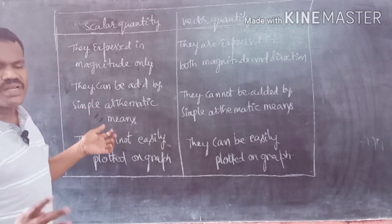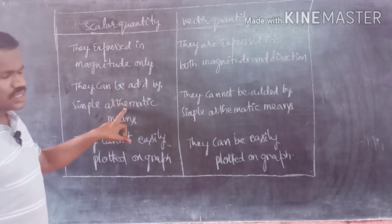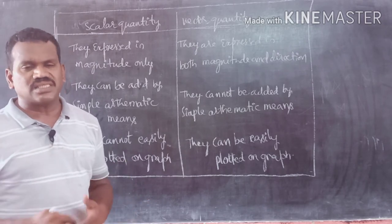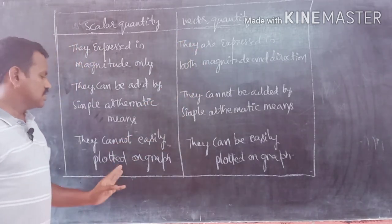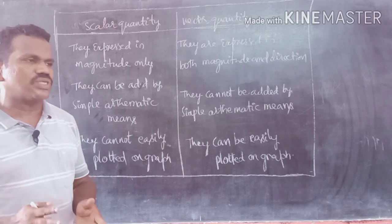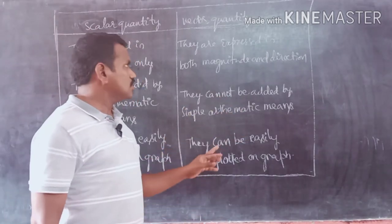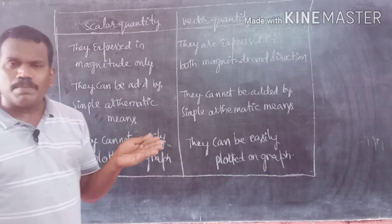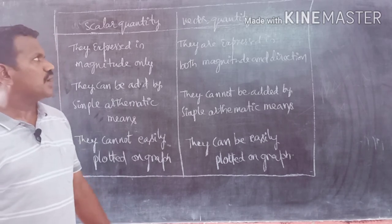Scalars are simply numerical values, so we can add, multiply, and subtract them easily using simple mathematical means. Vectors have direction also, so a resultant is required — we cannot do simple mathematical operations. Vectors can be represented on a graph, since a graph can show direction. Using a graph we can separate the system into parts and represent the direction of a vector easily. These are the basic ideas about scalar and vector quantities.